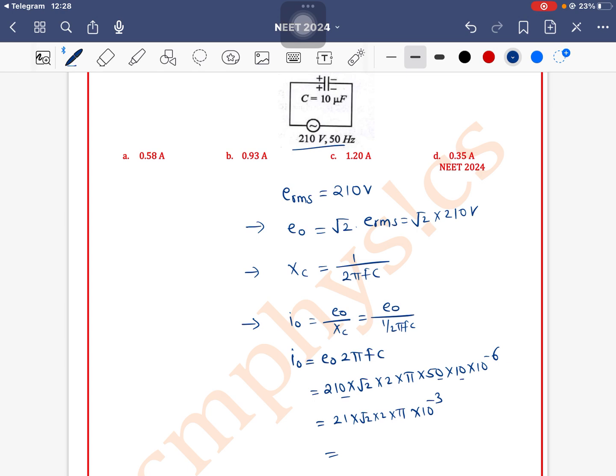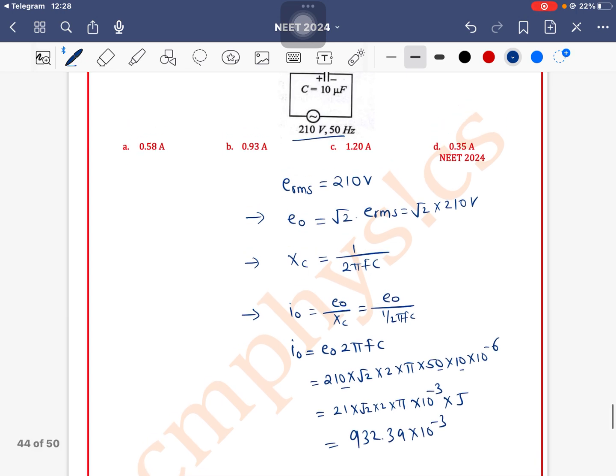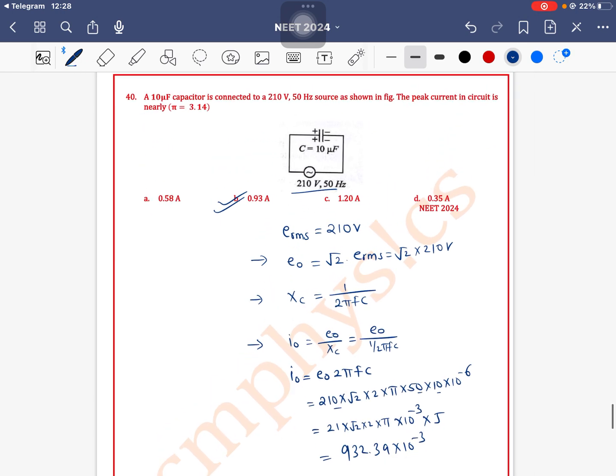We have missed something and 5 is missing. Here into 5 will be, into 5 is 932.39 into 10 to the power minus 3 means 0.93. Option B is the correct one.